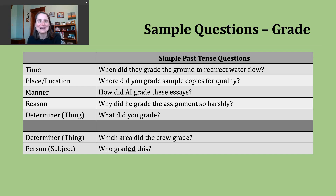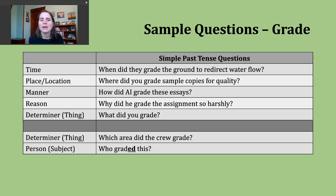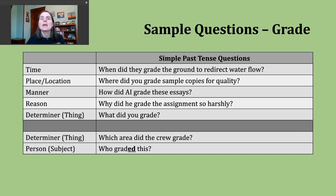Another type of question is a question about place or location. For that, we use the question word where, W-H-E-R-E. An example might be: 'Where did you grade sample copies for quality?' Here we want to know the place — were these things taken to a lab and assessed or sorted, or were they done on site? We're asking for a place or location.